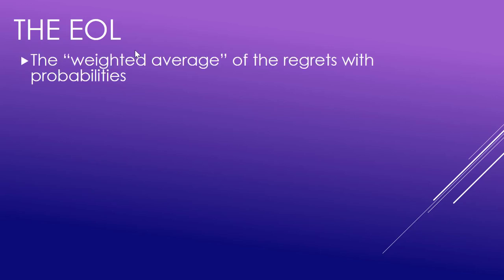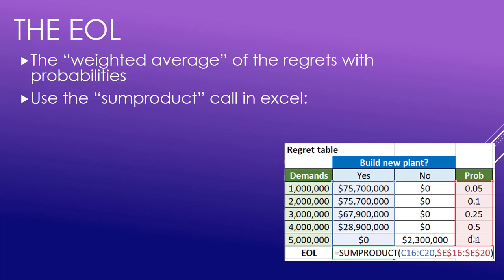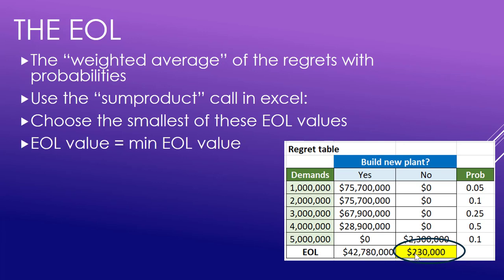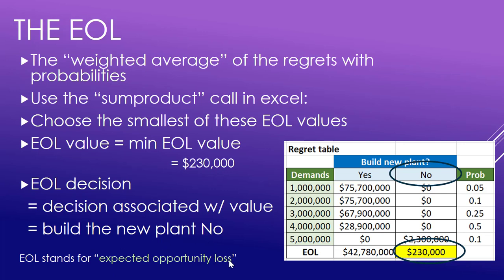Next, the value to look at is called the EOL — the Expected Opportunity Loss — and it's a weighted average of the regrets with the probabilities. We use the SUMPRODUCT function in Excel to get it. We take our probabilities and our regrets, do a SUMPRODUCT on them, and do that for both decisions — build the plant yes or no. Then we choose the smallest of these values. The 230,000 is smaller than the 42 million, so we choose that one. That becomes our EOL value, and the related decision is 'no' — do not build the plant if we're using the EOL decision.